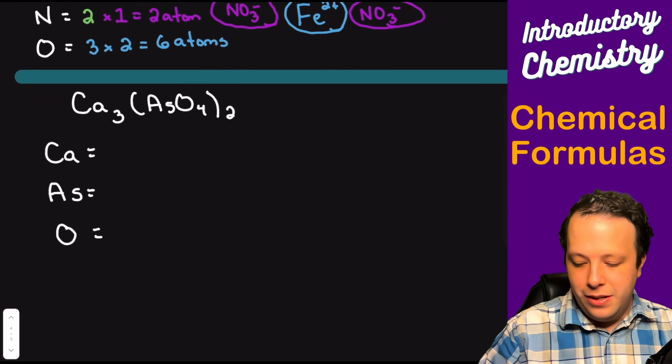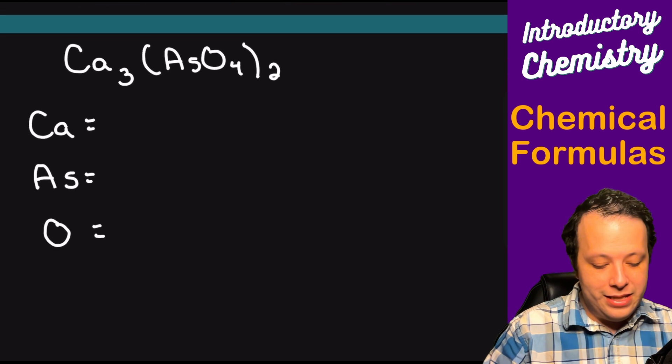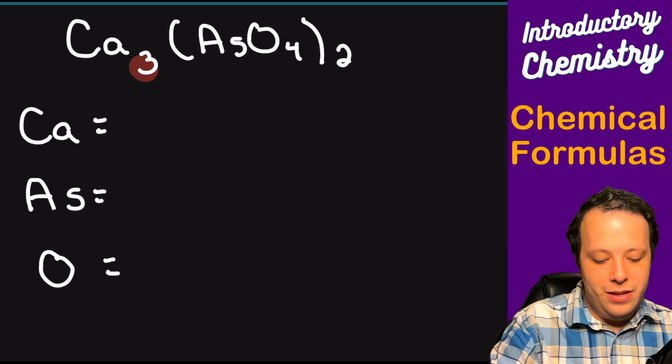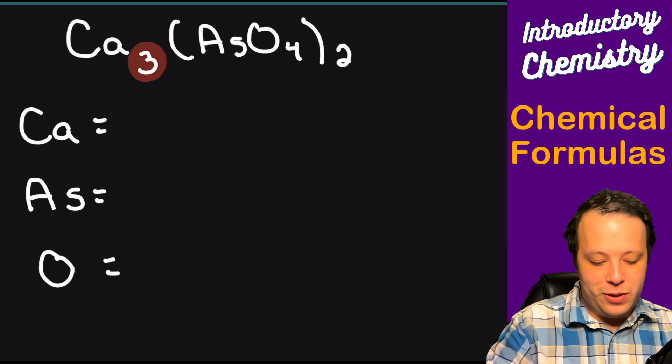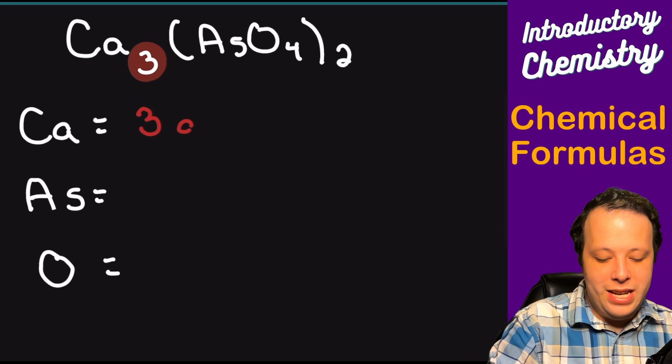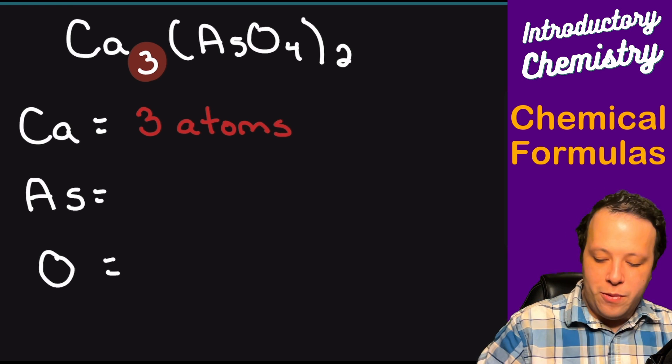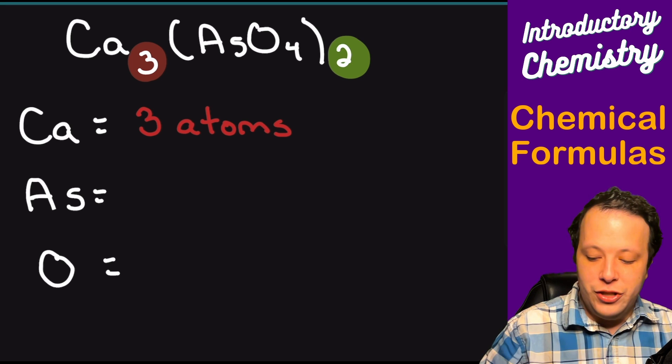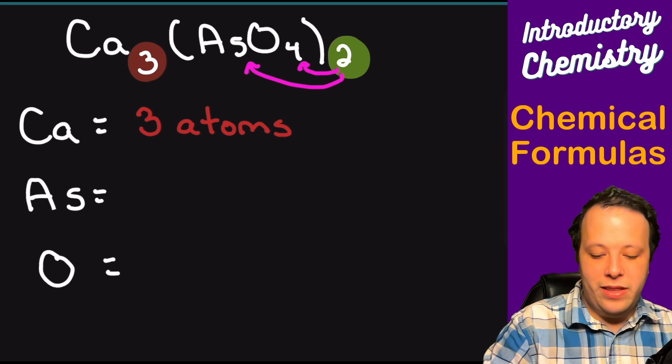So our next one here is essentially we have calcium arsenate. So calcium arsenate is the same idea. We're going to be counting all these different species that we have. So we notice there's some subscripts here. So the first one was for calcium; we have three atoms of calcium. Now we have once again our parentheses; we have a two outside of that, so we're going to be distributing it to all the different species within.